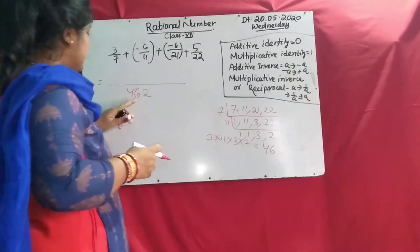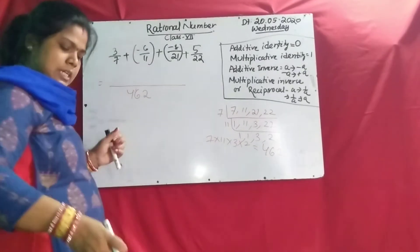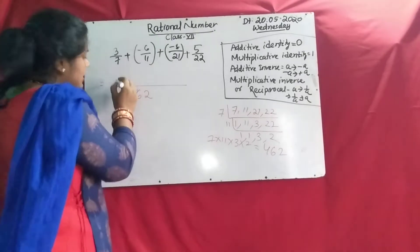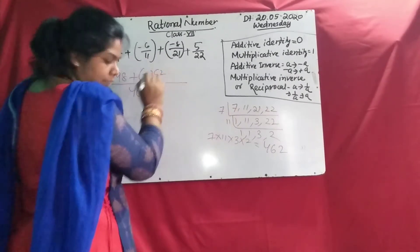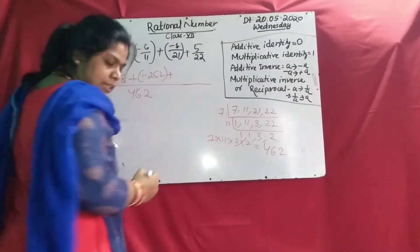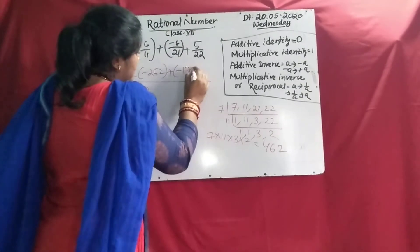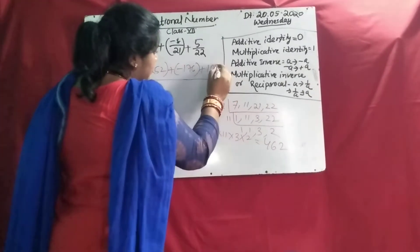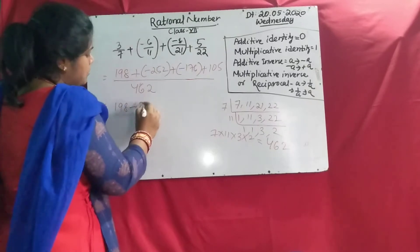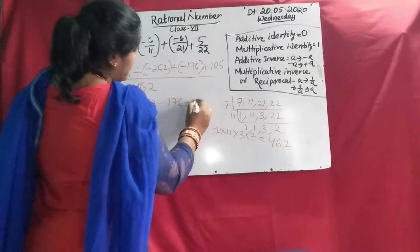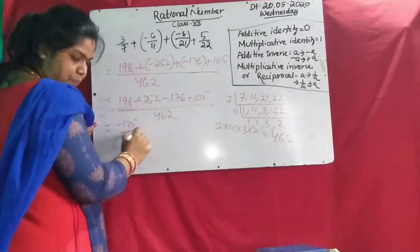If you divide 462 by 7 and multiply by 3, you get 198. When you divide by 11 and multiply by minus 6, you will get minus 252. Then divide by 21 and multiply by minus 8, you get minus 176. Next you will get 105. So the answer is 198 plus minus 252 minus 176 plus 105 by 462. When you solve, you will get minus 125 by 462.